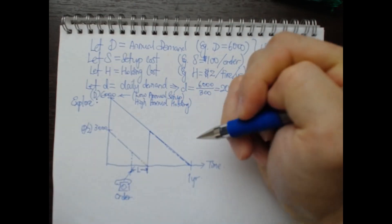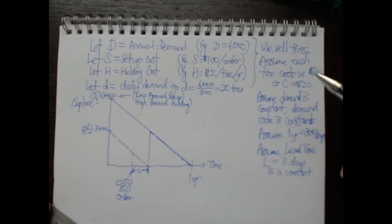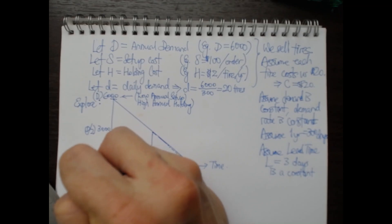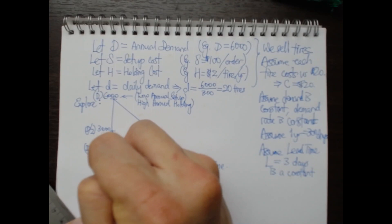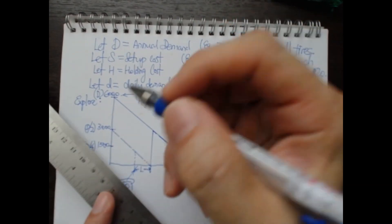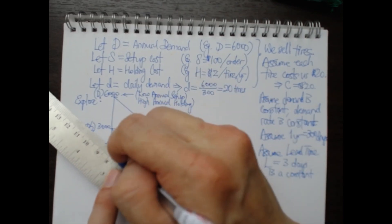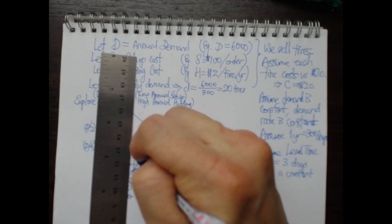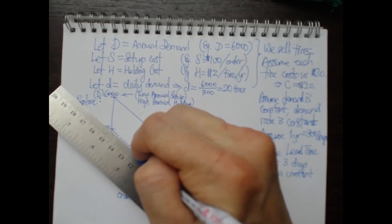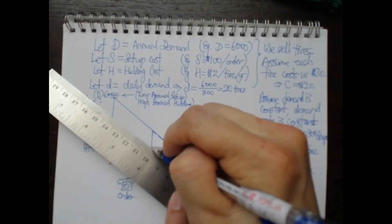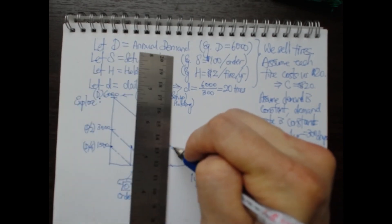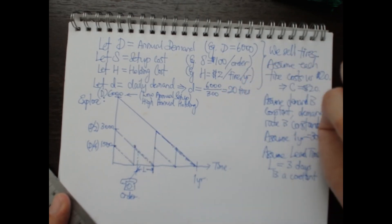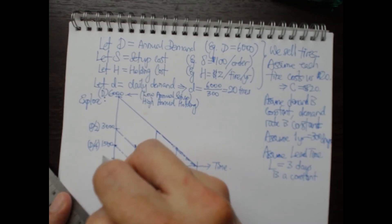The cycle then repeats, so in a year we'll have two orders, saving roughly half the warehouse space. We can extend this further and order one-quarter of the annual demand each time — about 1,500 tires — which means we must place four orders per year. Each ordering cycle forms a triangle shape on the inventory graph, and one triangle corresponds to one order.